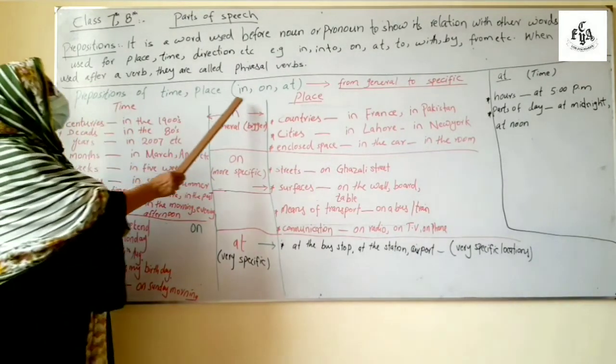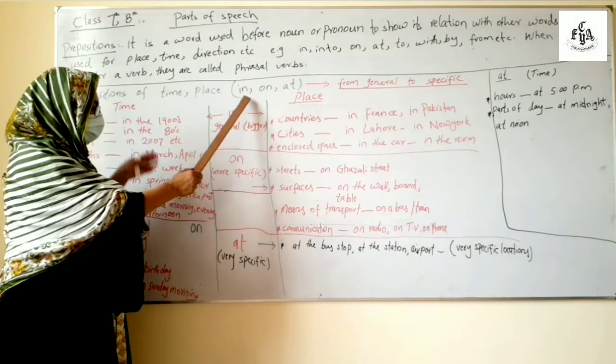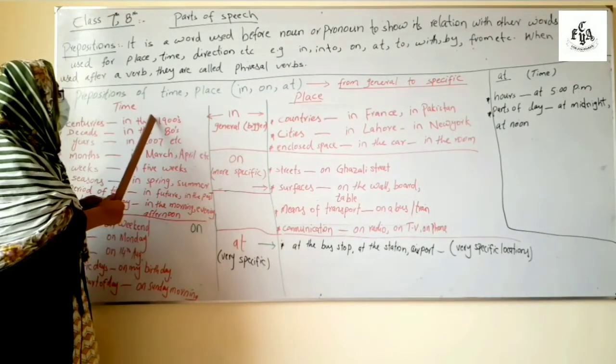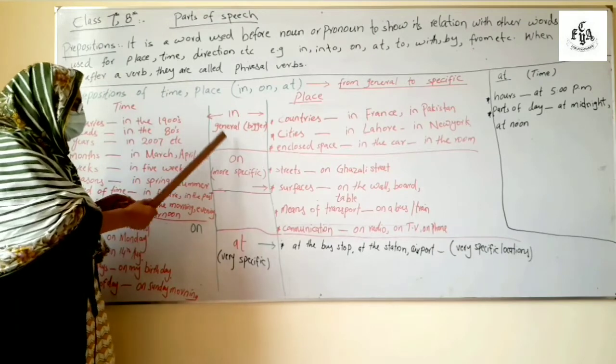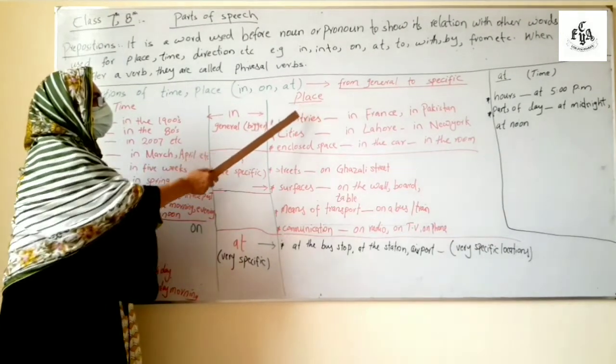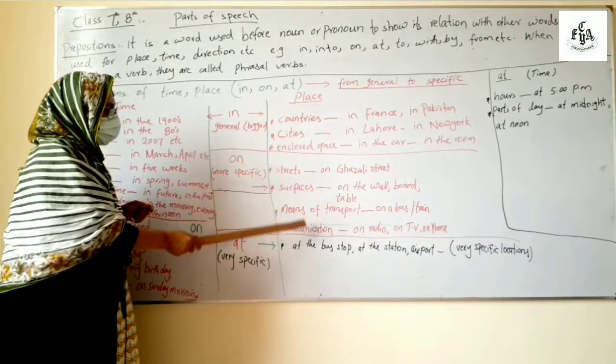These are like the table given to you is from general time, bigger time, to very specific or short. Same goes for place from bigger to smaller.